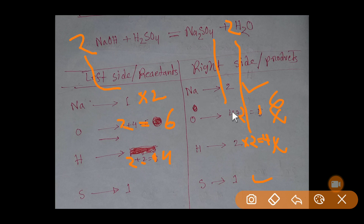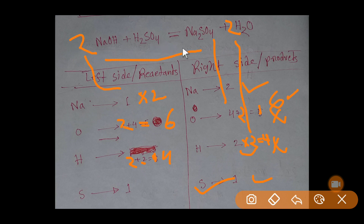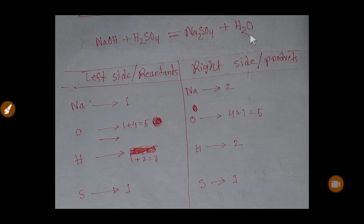Now sodium is balanced, oxygen six equals six is balanced, hydrogen is balanced, and sulfur is balanced. This is the balanced reaction: 2 NaOH + H₂SO₄ → Na₂SO₄ + 2 H₂O. Now we will go to the second method to balance this reaction.